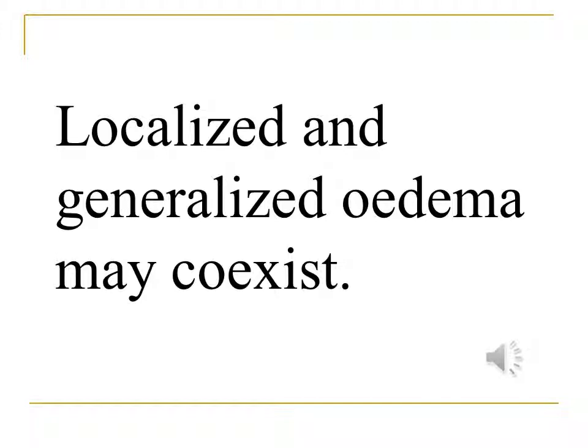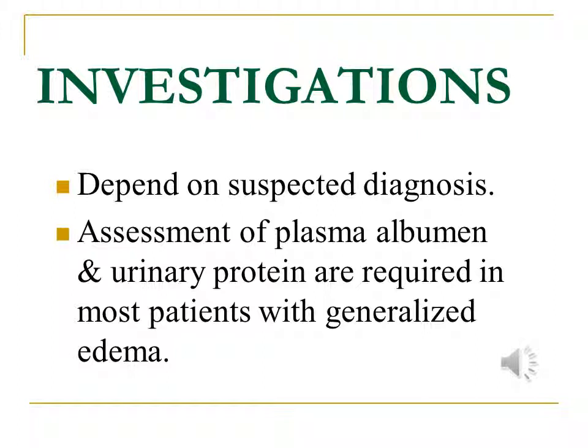A patient with nephrotic syndrome might develop deep vein thrombosis in one leg, in which case that leg would be more swollen than the other. A patient with heart failure might develop hemiplegia, in which case the paralyzed side would be more swollen than the unaffected side. Investigations of a patient with edema obviously depend on the diagnosis you suspect. Testing the urine for protein is usually simple and should be done to exclude renal disease.